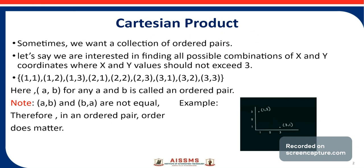Now, (a, b) for any a and b is called an ordered pair. I am calling this an ordered pair because the order of a and b does matter.